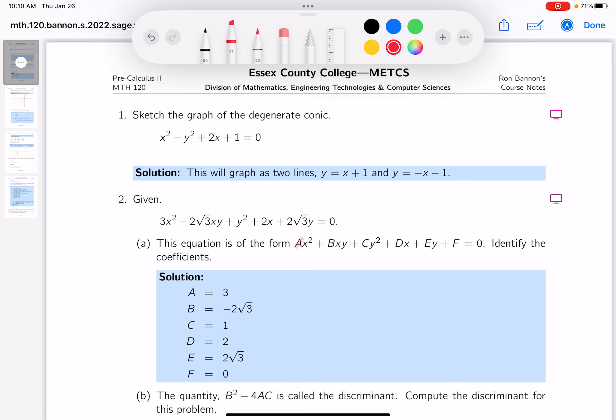So I'm going to look at it. The A would be the coefficient on the square term, which is clearly 3. The coefficient on the XY term is actually minus 2 root 3s. The coefficient on the Y squared term is 1. The coefficient on the X term is 2.